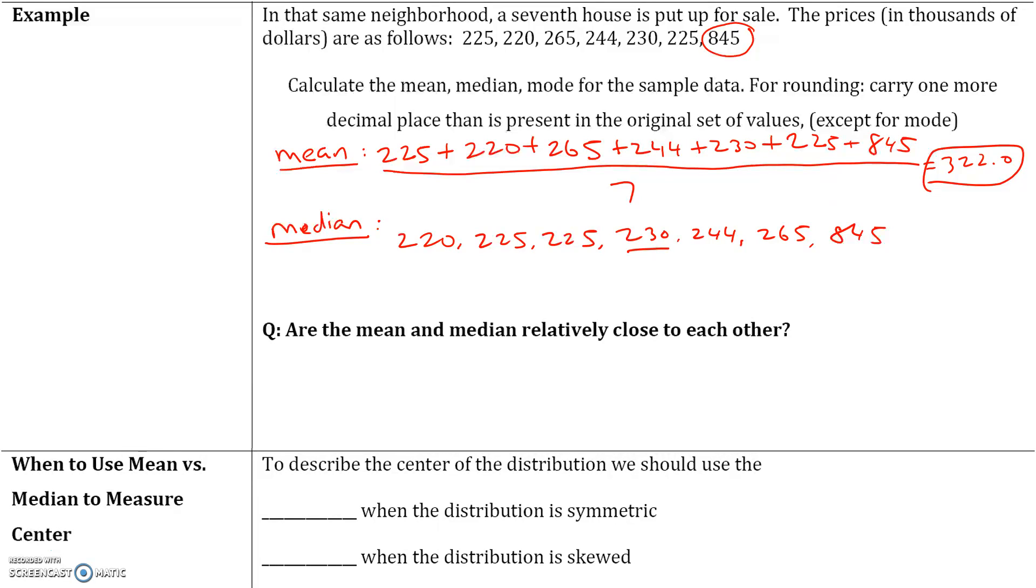This will be the fourth value. If you want to use a little trick, you take the number of values, which is 7, divided by 2, which gives you 3.5. Always round to the next whole number, always round up. Even if this was 3.1, we would always round up, which is 4. So we're looking for the fourth value: 1, 2, 3, 4. Our fourth value is 230. So the median equals 230.